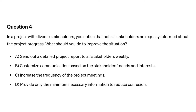Question four. In a project with diverse stakeholders, you notice that not all stakeholders are equally informed about the project progress. What should you do to improve the situation? A. Send out a detailed project report to all stakeholders weekly. B. Customize communication based on the stakeholders' needs and interests. C. Increase the frequency of the project meetings. D. Provide only the minimum necessary information to reduce confusion.